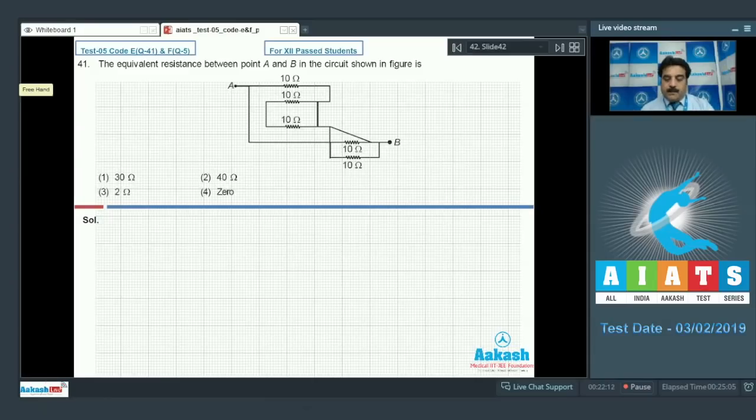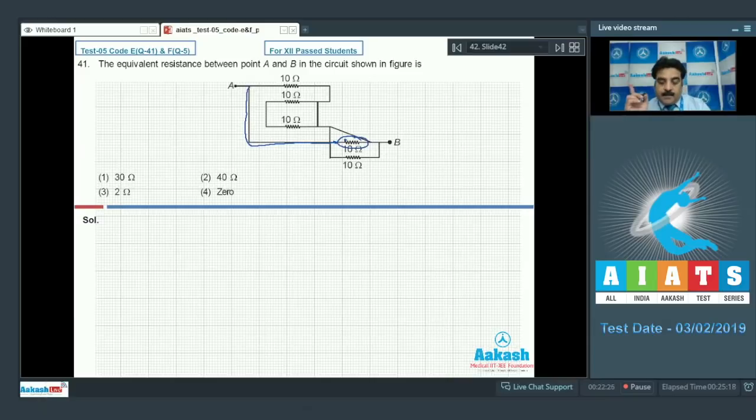Question number 41: the equivalent resistance between A and B in the circuit. If you concentrate on this wire, you can observe this is a short circuit with an extra wire.